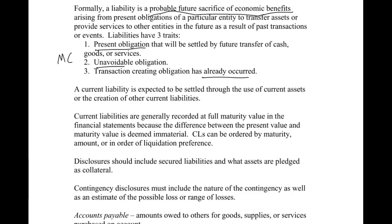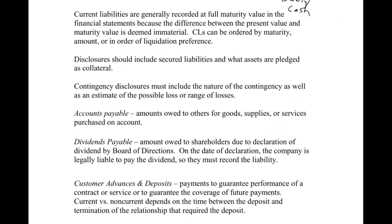A current liability is expected to be settled through the use of current assets, and this is usually cash. If we borrow money or buy something on account, we pay it off with cash, or possibly through the creation of other current liabilities — we'll see an example of that in the notes payable section. Current liabilities are generally recorded at full maturity value in the financial statements, because the difference between the present value and maturity value is deemed immaterial. They can be ordered by maturity amount or in order of liquidation preference on your balance sheet. Disclosures should include secured liabilities and what collateral is pledged.